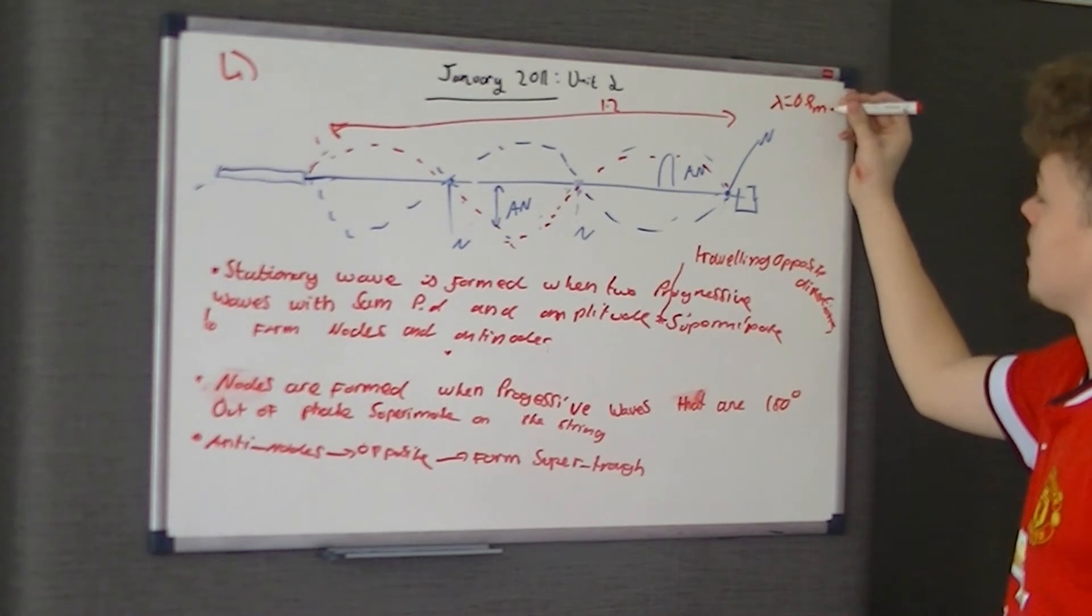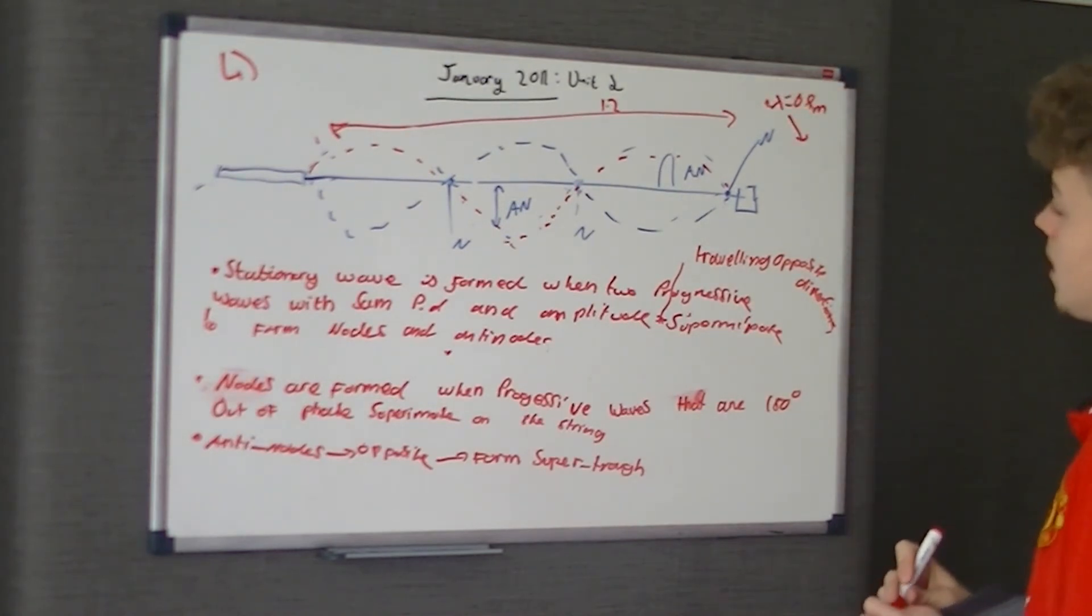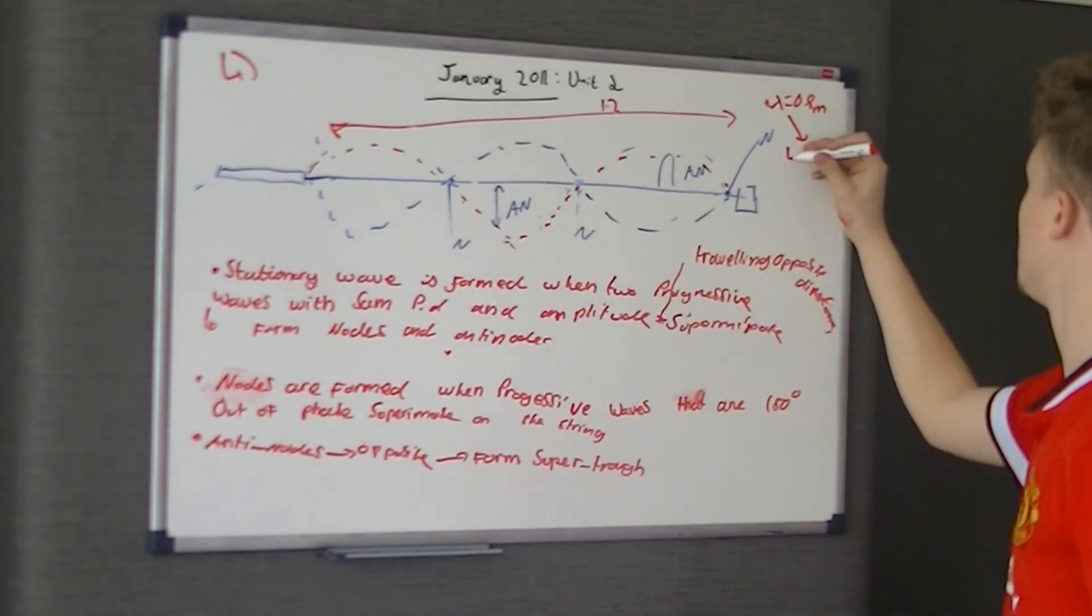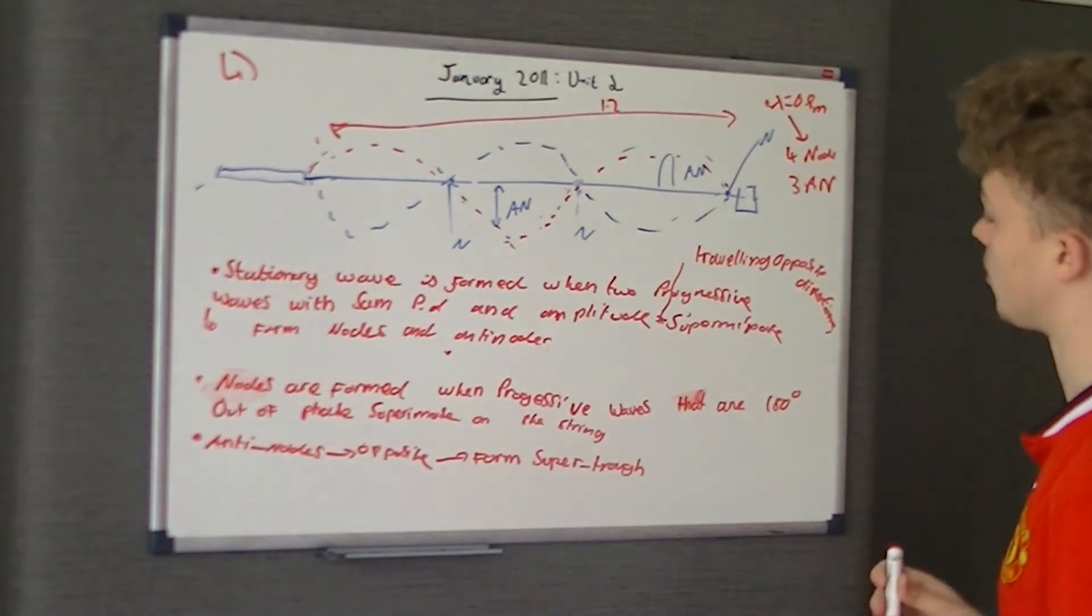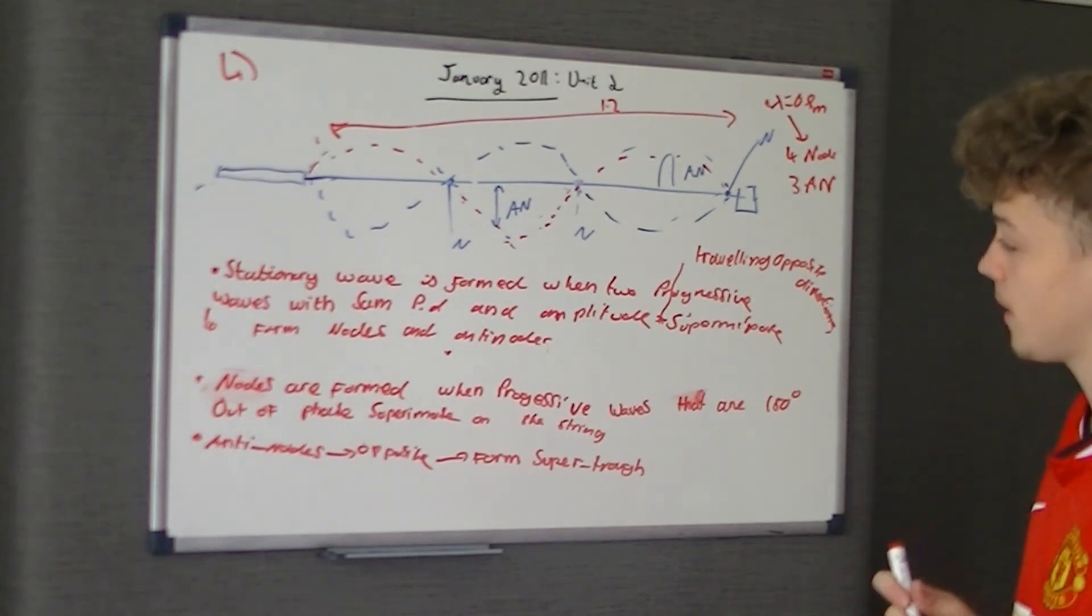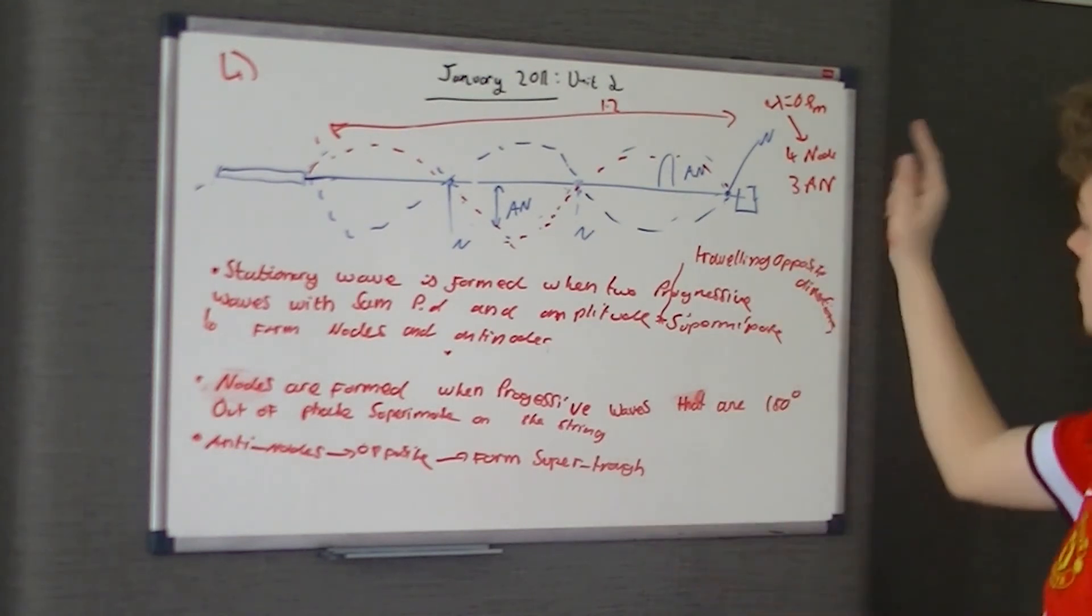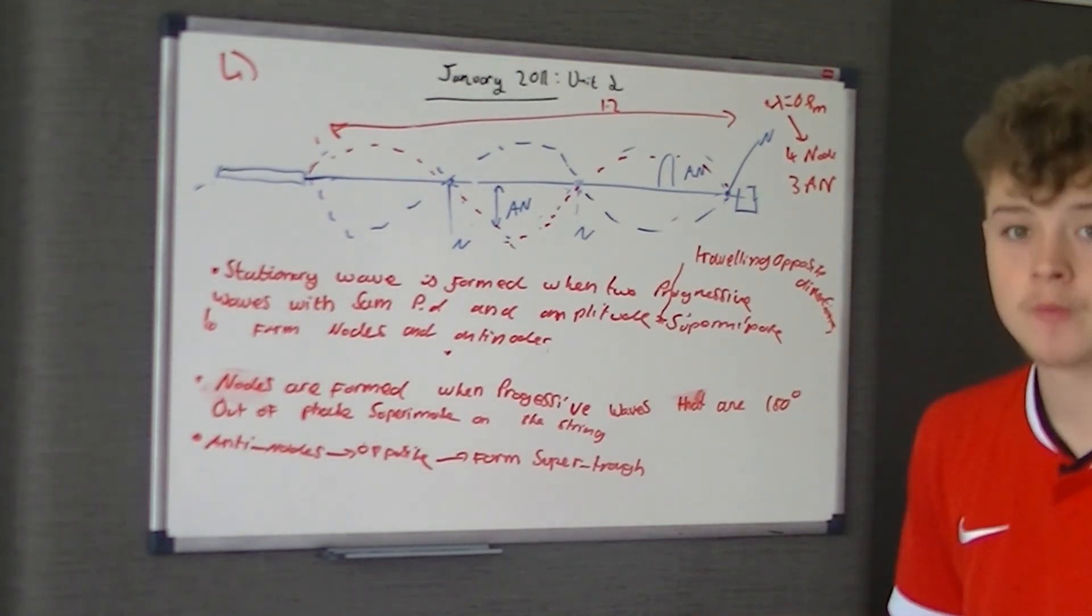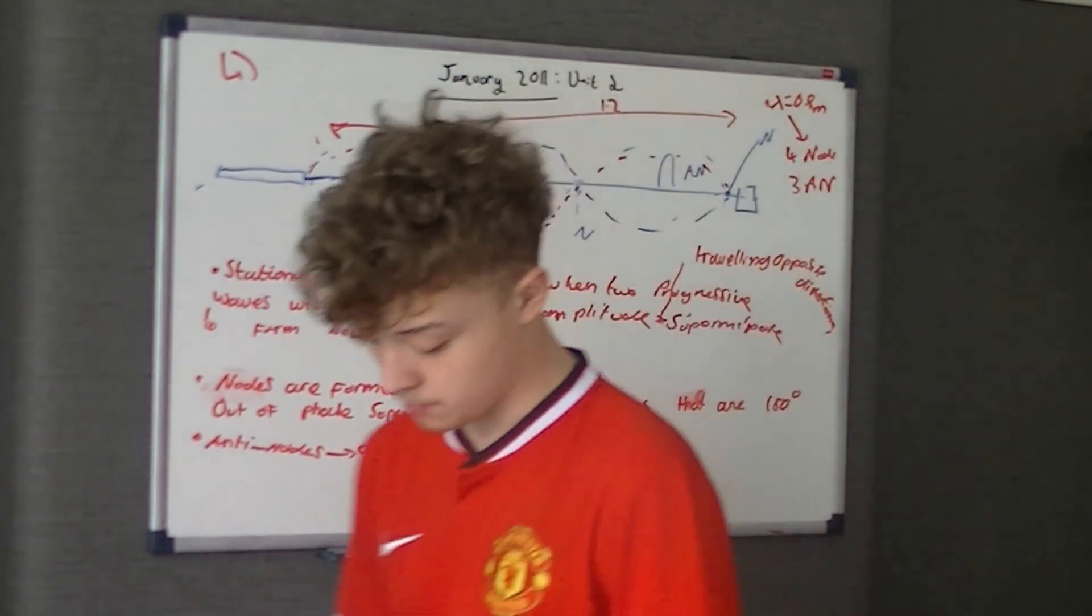And you just say another thing. So, this is your other point. You'd say how many nodes there are. There's one, two, three, four. Four nodes. And three A, which is three anti-nodes. And that's your main bit. So, you explain how the stationary wave is formed. You say what nodes are. You say what anti-nodes are. You say how many nodes and anti-nodes there are. And you'd state the wavelength.